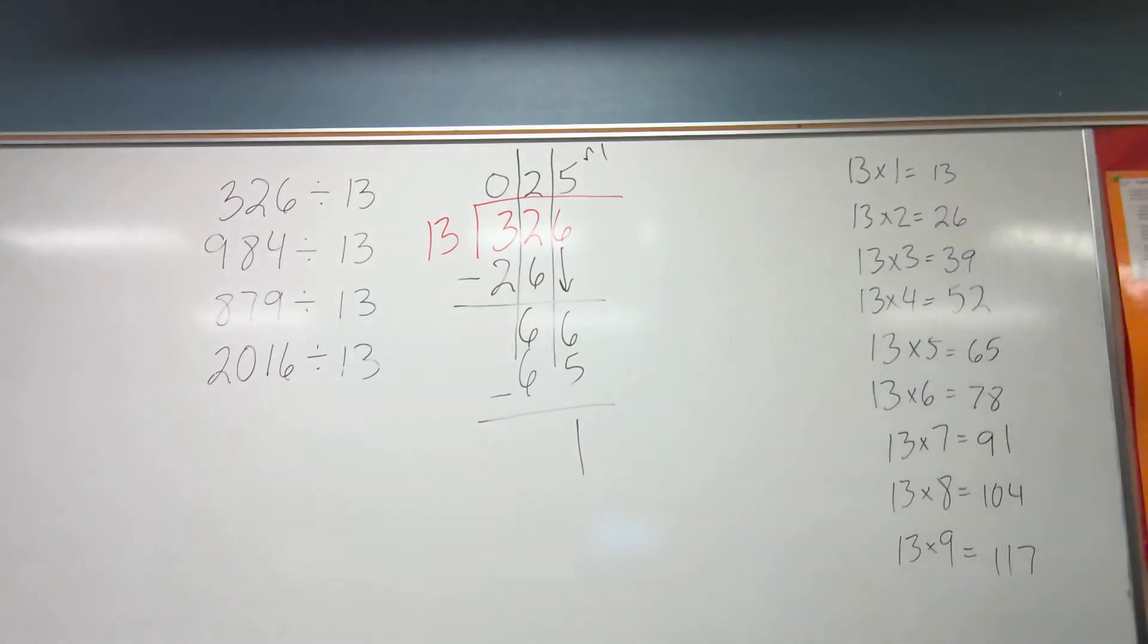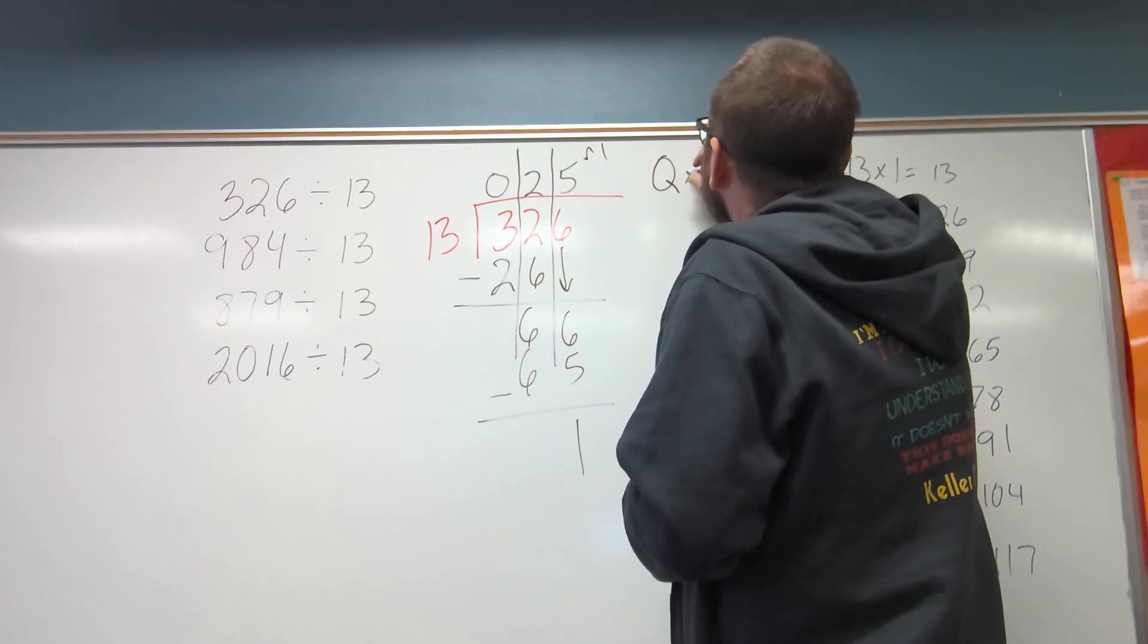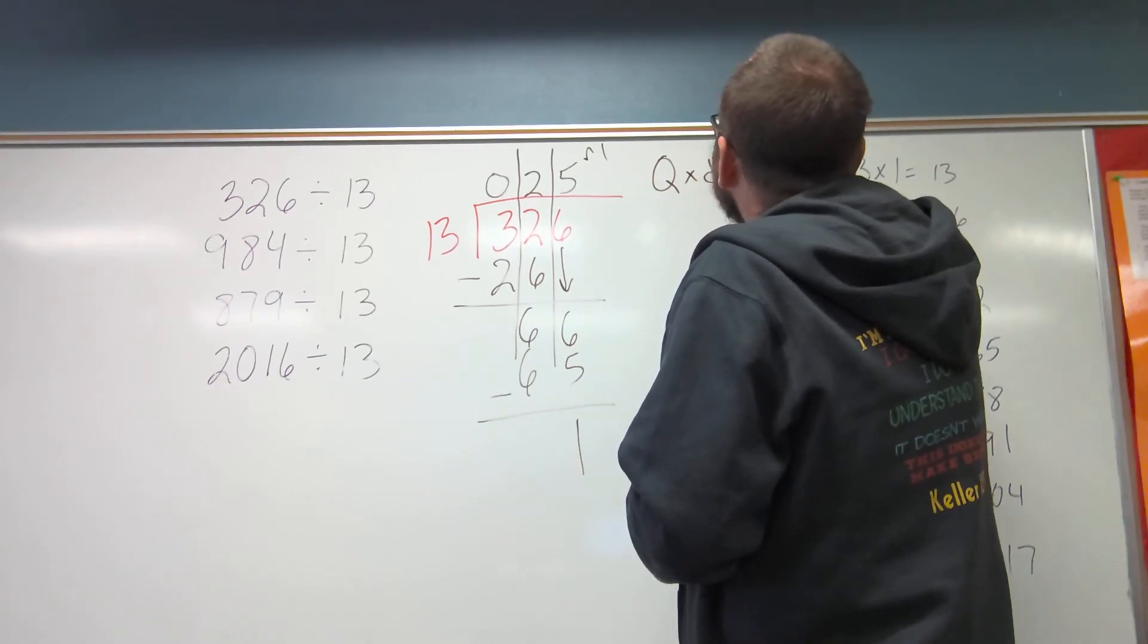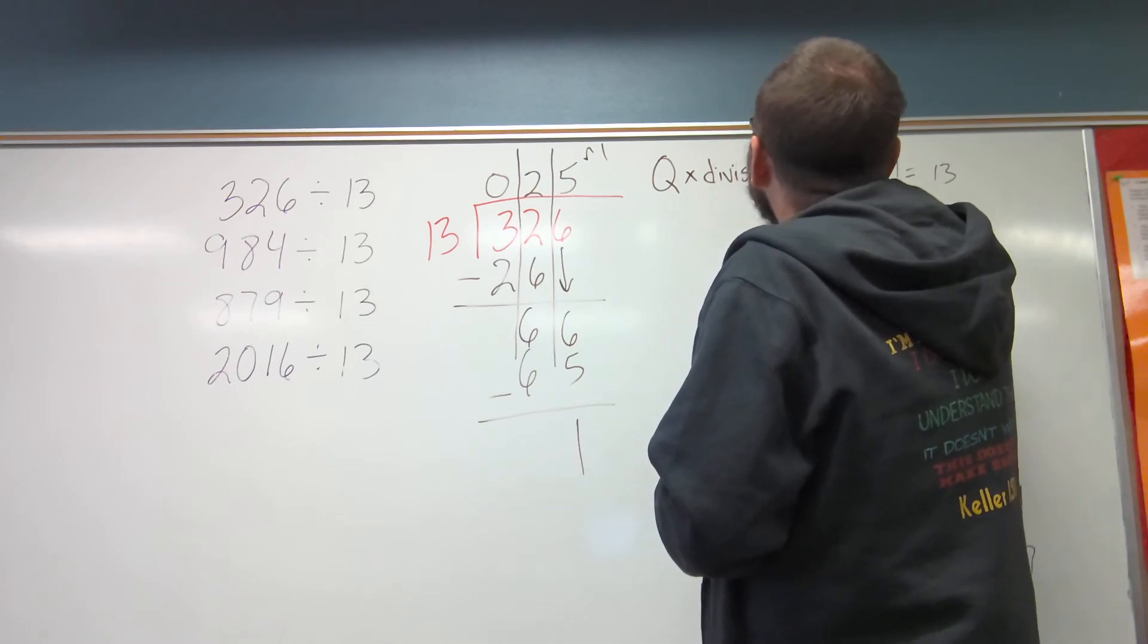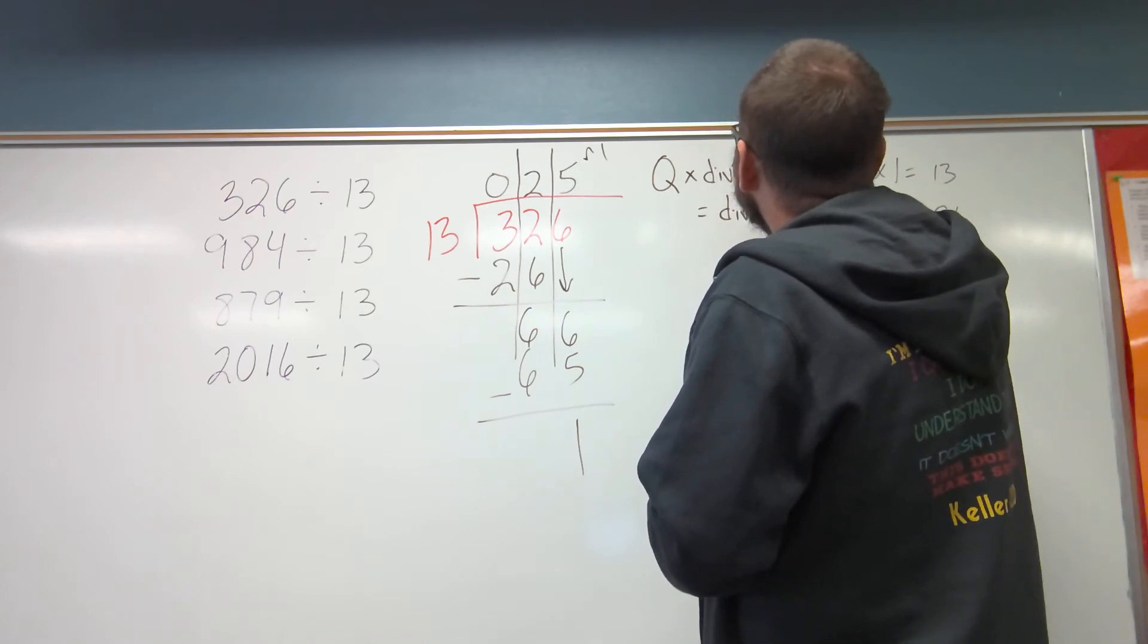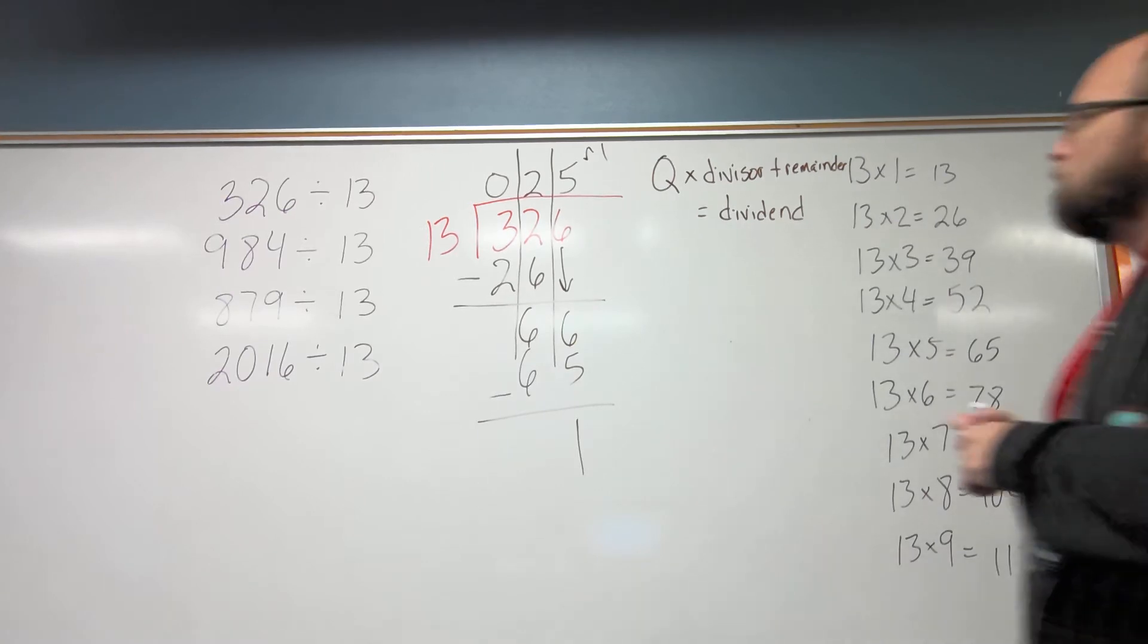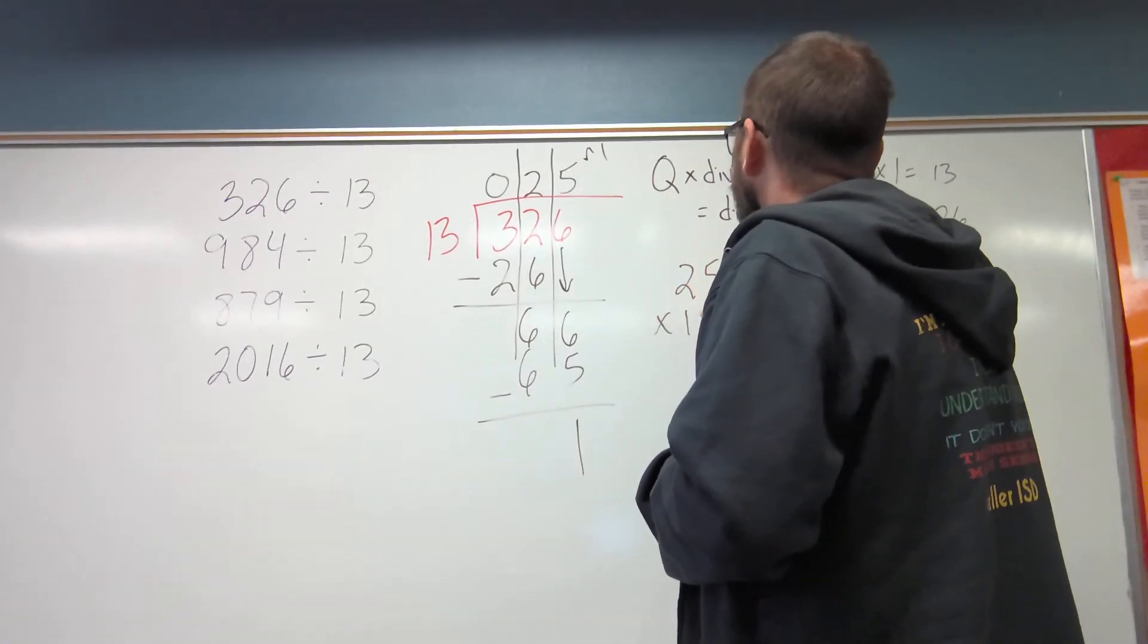But I constantly get pestered by Zane, saying, I really want to get a good grade on my work. How can I check this? And so I say, Zane, we can do multiplication. Which the multiplication is the inverse operation, which is the quotient times the divisor plus the remainder. And that should equal my dividend. You'll figure it out when I do an example.